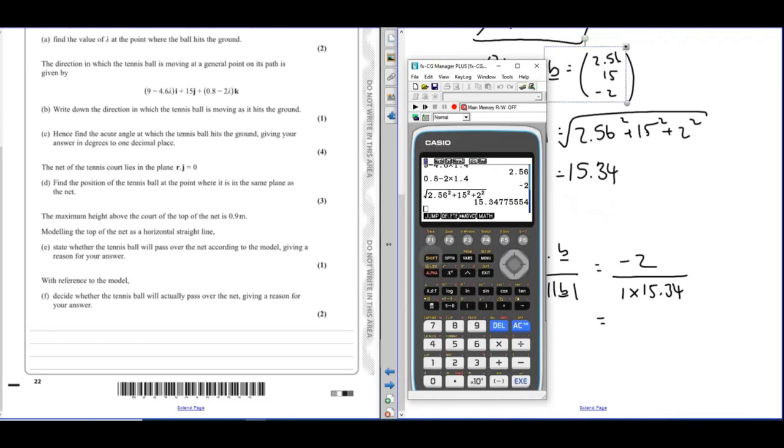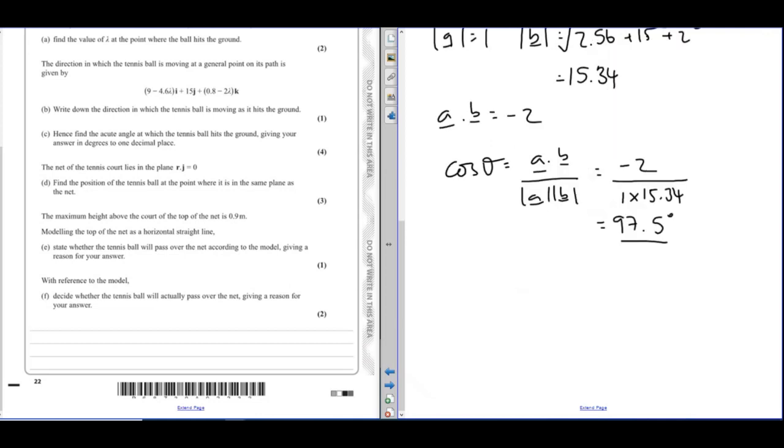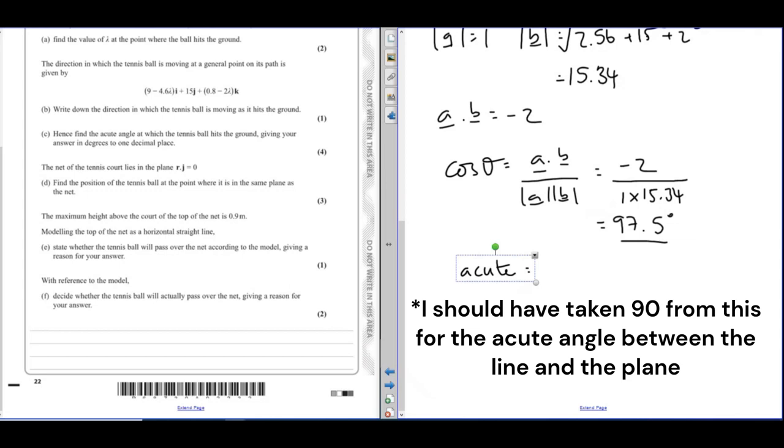Work that out in your calculator. So inverse cos minus 2 over 15.34. And we're going to want it to be in degrees. In degrees, that's 97.5. It asks for one decimal place. It asks for the acute angle, so I could take that away from 180, or I could have just done this as positive in my calculator. So the acute angle, taking that away from 180 gives you 82.5 degrees.